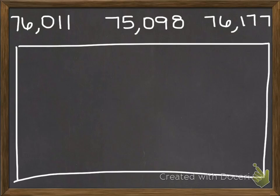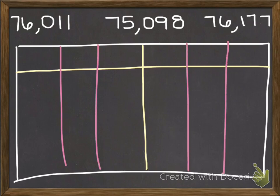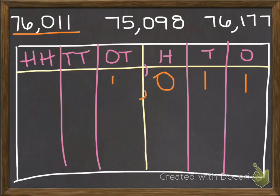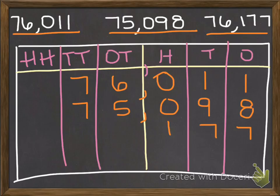Now let's try a problem where we have more than two numbers. It's still the same — we still start with the same place value chart. I divided it in two for the thousands period and the units period, and I still need three columns on each side. This is ones, tens, hundreds, one thousands, ten thousands, and hundred thousands. The next step is still the same: I simply fill in the numbers, making sure each place is in the right place on the chart, for all three numbers.